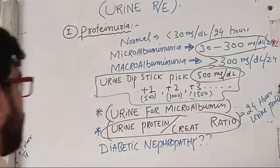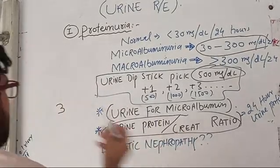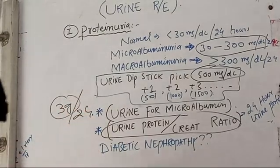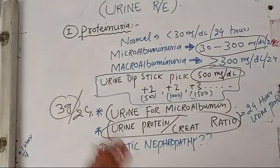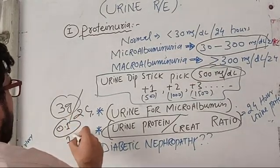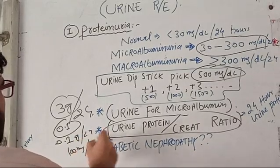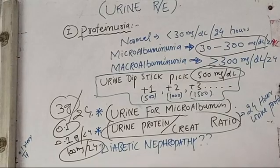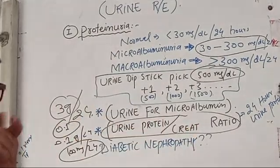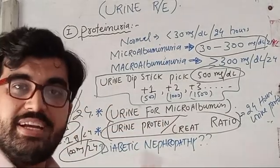If the urine protein-to-creatinine ratio is equal to 3, it means 3 grams per 24 hours. If it is equal to 0.1, it means 100 milligrams per 24 hours. So it can detect microalbuminuria as well as macroalbuminuria, making it more reliable.